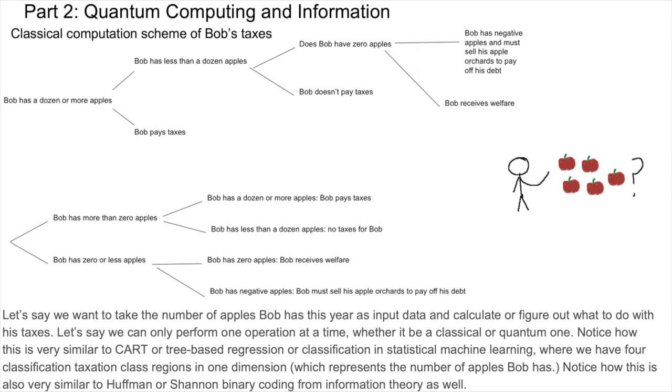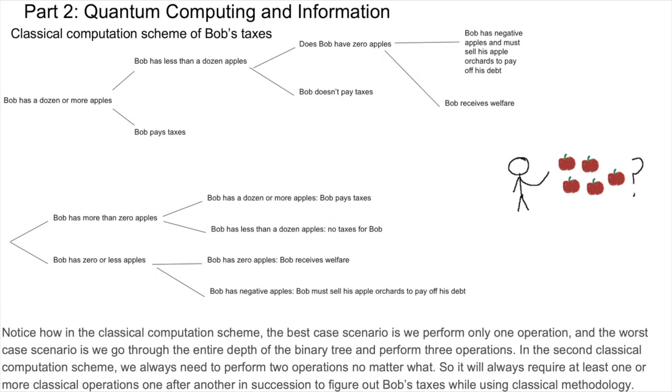Let's say we want to take the number of apples Bob has this year as input data and calculate or figure out what to do with his taxes. Let's say we can only perform one operation at a time, whether it be a classical or quantum one. Notice how this is very similar to CART or tree-based regression or classification in statistical machine learning, where we have four classification taxation class regions in one dimension, which represents the number of apples Bob has. Notice how this is also very similar to Huffman or Shannon binary coding from information theory as well. Notice how in the classical computation scheme, the best-case scenario is we perform only one operation, and the worst-case scenario is we go through the entire depth of the binary tree and perform three operations. In the second classical computation scheme, we always need to perform two operations no matter what. So it will always require at least one or more classical operations one after another in succession to figure out Bob's taxes while using classical methodology.